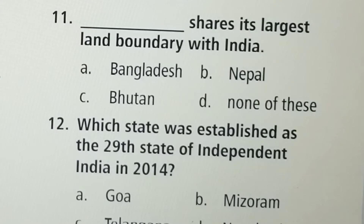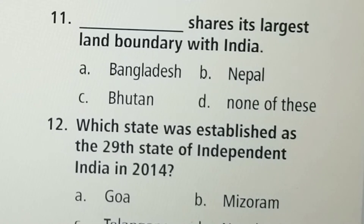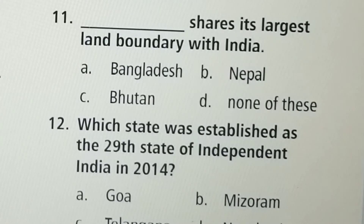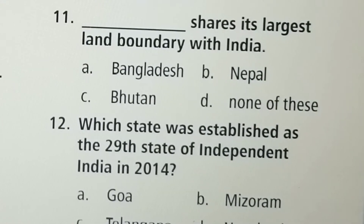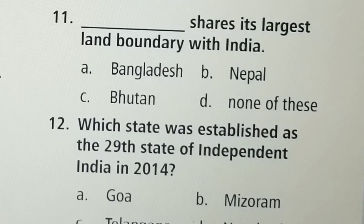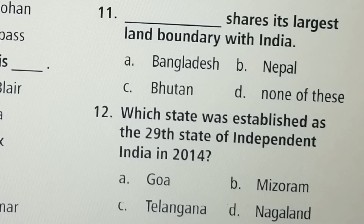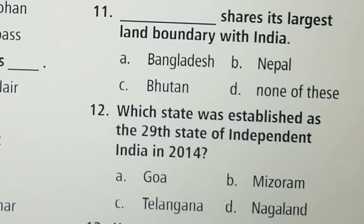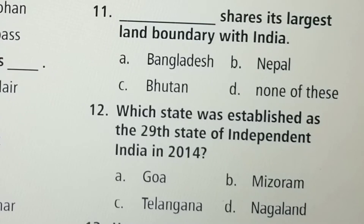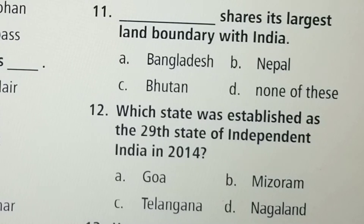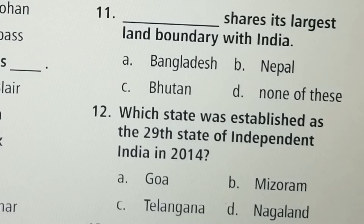Next question: Which state was established as the 29th state of India in 2014? Option A: Goa, Option B: Mizoram, Option C: Telangana, Option D: Nagaland. Option C, Telangana, is the correct answer.